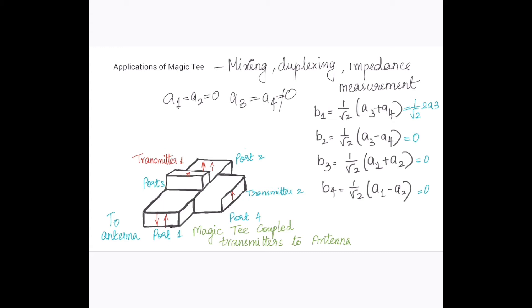So that means that as per the equations of the magic tee, the power delivered to port 1 will be equal to 1 by root 2 into a3 plus a4, so that will be equal to 1 by root 2 into 2a3.